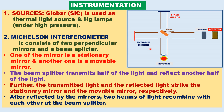The mercury vapor under high pressure also serves as a source. The instrument consists of a Michelson interferometer. This setup is called the Michelson interferometer. It consists of two mirrors: a fixed mirror and a movable mirror, as well as a beam splitter.